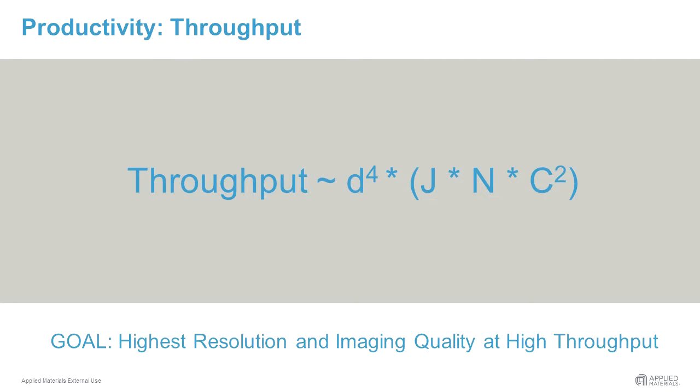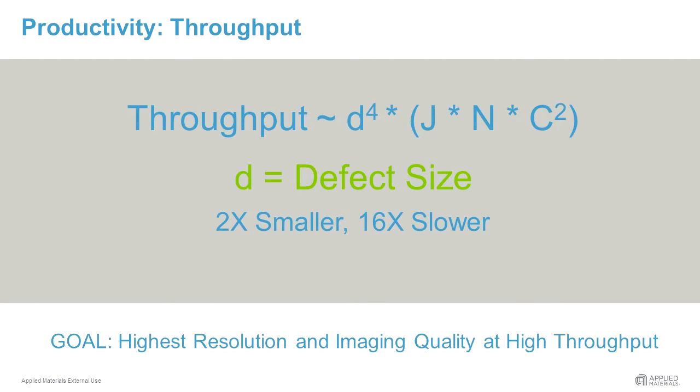This formula describes the main factors which determine the throughput of an e-beam inspection system. One important factor is determined by the application, the size D of the defect to be detected. And this factor is becoming more challenging with every technology node.